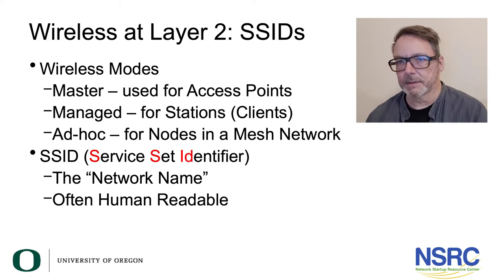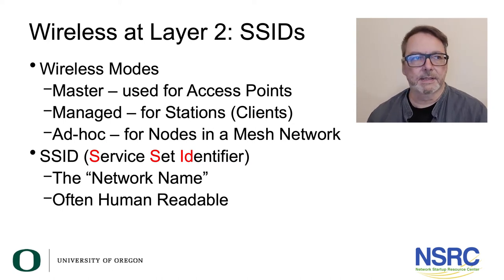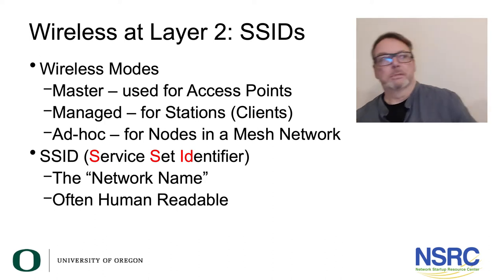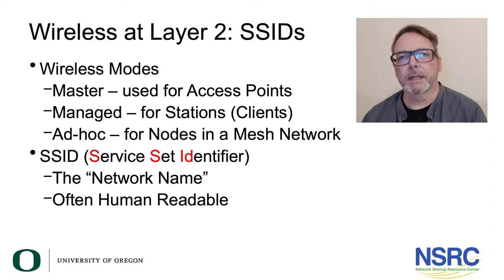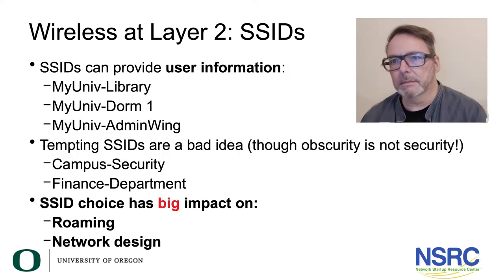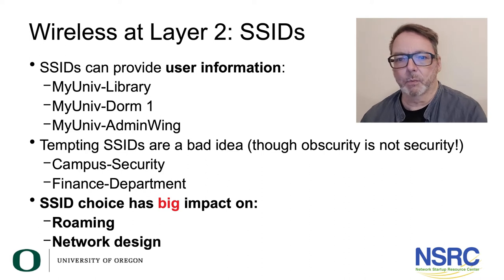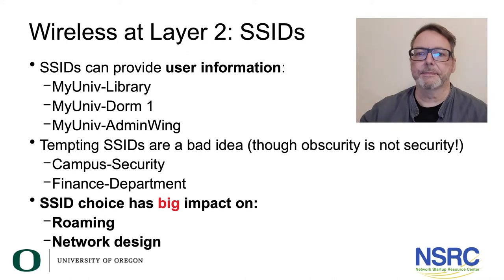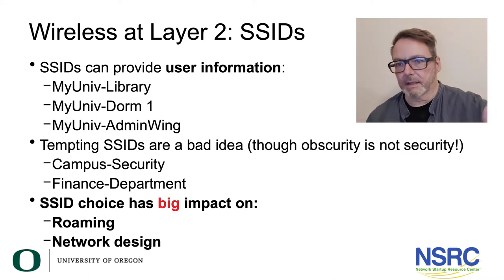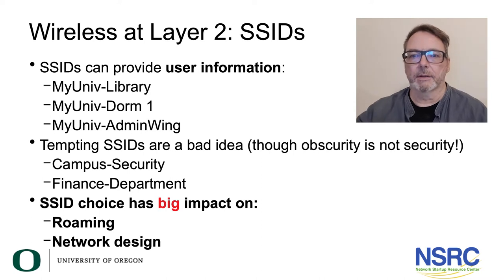Layer 2 — the SSIDs. SSIDs are the network names, service set identifiers — it's what the user sees when they want to connect to a network. It can be something like the name of a university, hotspot, or café. They're typically readable and can provide user information, telling people what a network is. That's why we want them to make sense — guest network, staff network.